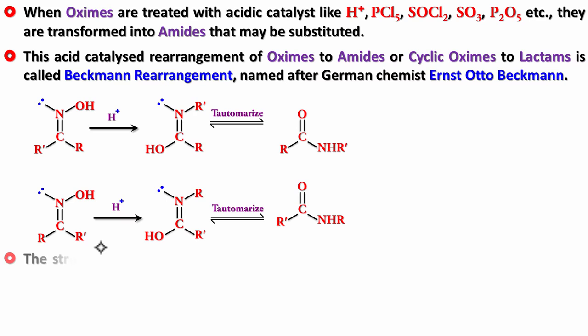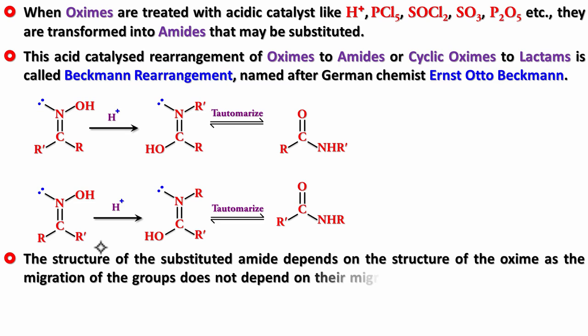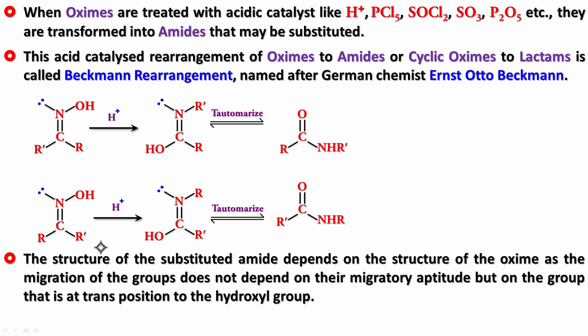The structure of the substituted amide depends on the structure of the oxime, as the migration of the groups does not depend on their migrating aptitude but on the group that is at trans-position to the hydroxyl group. If you notice, R prime was trans to OH and R prime migrated; R was trans to OH and R migrated. So the migration is not based on migrating aptitude — instead, it is based on which group is trans to OH. So it's time for the mechanism.